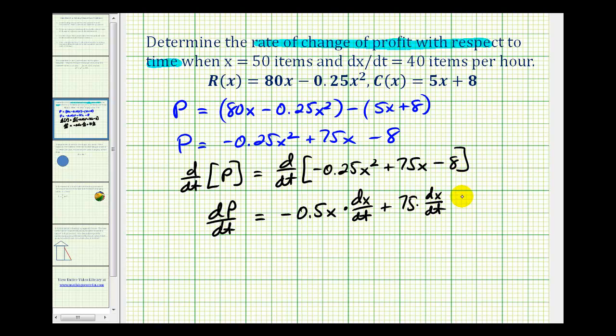So to measure the rate of change of profit with respect to time when x is 50 and dx/dt equals 40, we'll substitute 50 for x here, and we'll substitute 40 for dx/dt here and here.